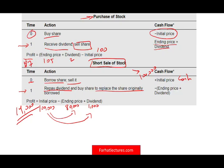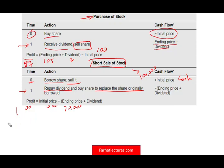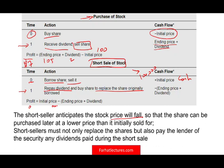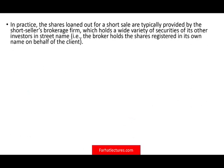The profit looks good, but this is very risky. The ending price could rise to $120,000 and you only have $100,000, so you always take a huge risk with a short sale. Remember: you anticipate the stock to fall so you can buy at a lower price, and you must pay back the dividend and replace the shares.